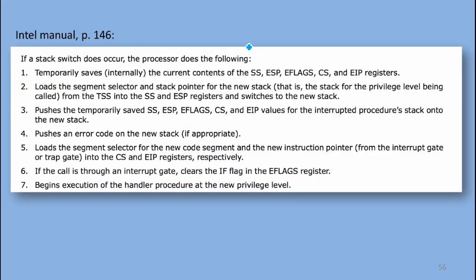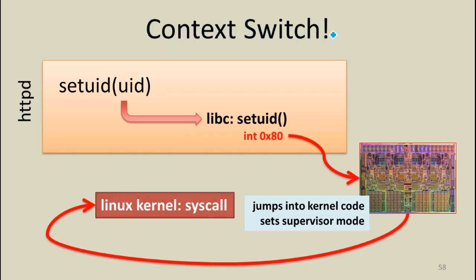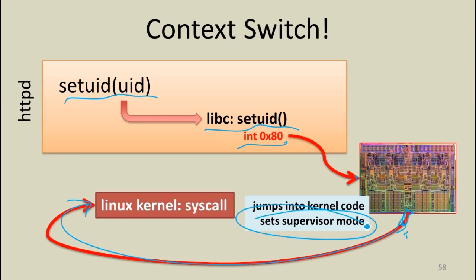This is what's happening — we're doing a stack switch in response to the interrupt. Part of what's happening is the value in this register, which includes the privilege level, can now be set to supervisor mode. Now we can run code with the privileges of the kernel. We've done our context switch. In our web server we called setuid, that went into libc, that did the interrupt, got to the processor, the processor interrupt table happened, and now we're in the kernel running in supervisor mode.